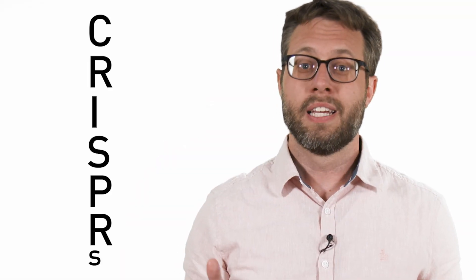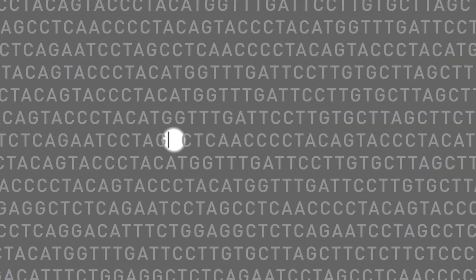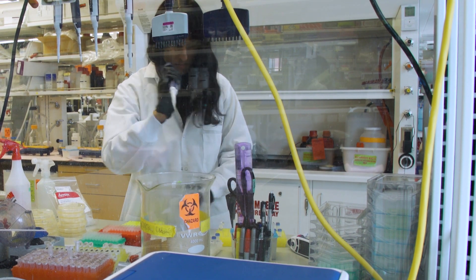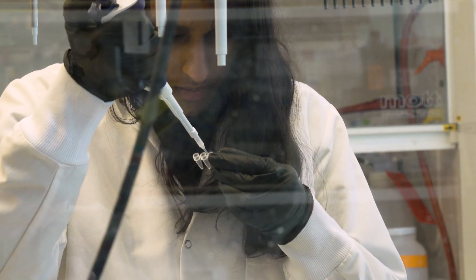Based on certain microbial immune systems called CRISPRs, these gene-editing systems act like a word processor's find-and-replace function for the genome. Scientists are adapting, expanding, and improving CRISPR-based systems to create a diverse gene-editing toolkit. The goal is to make any desired change in the genome accurately, precisely, and safely.